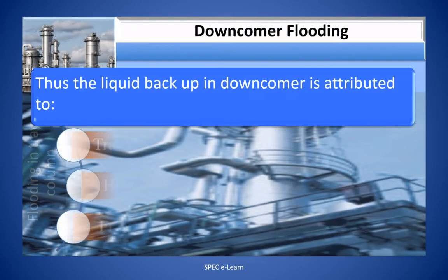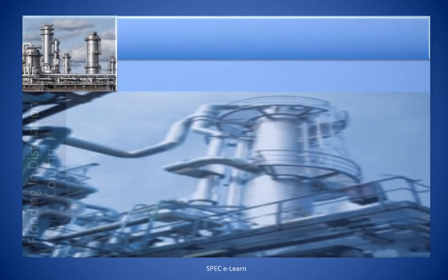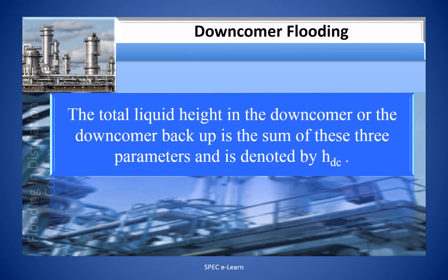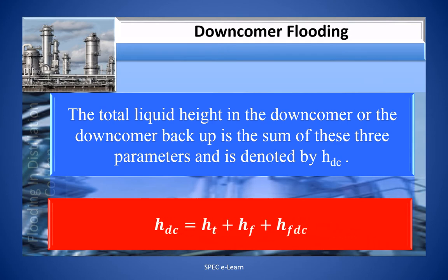The liquid backup in the downcomer is attributed to: tray hole pressure drop (H_T), height of liquid froth on the tray (H_F), and friction losses in the downcomer (H_FDC). The total liquid height in the downcomer, or downcomer backup, is the sum of these three parameters: H_DC = H_T + H_F + H_FDC.